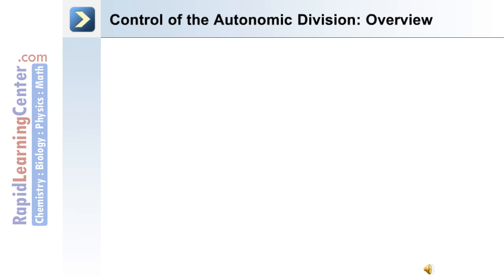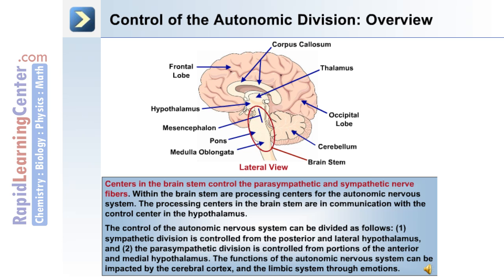Centers in the brainstem control both the parasympathetic and sympathetic nerve fibers, and these processing centers are in communication with the control center in the hypothalamus. The sympathetic division is controlled from the posterior and lateral hypothalamus, while the parasympathetic division is controlled from portions of the anterior and medial hypothalamus. The functions of the autonomic nervous system can also be impacted by the cerebral cortex and the limbic system through emotions.